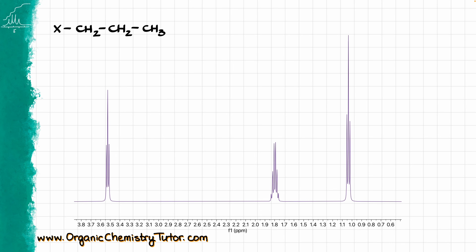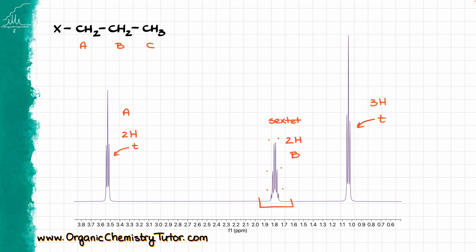The next group is just as iconic — that is the propyl group. The hallmark of the propyl group is going to be a triplet responsible for two hydrogens, then another triplet responsible for three hydrogens, and then in the middle we have a large signal with six peaks — that is a sextet, which is going to be responsible for two hydrogens. Assigning protons A, B, and C: group A is the first triplet, group B is the sextet, and group C is the last triplet.